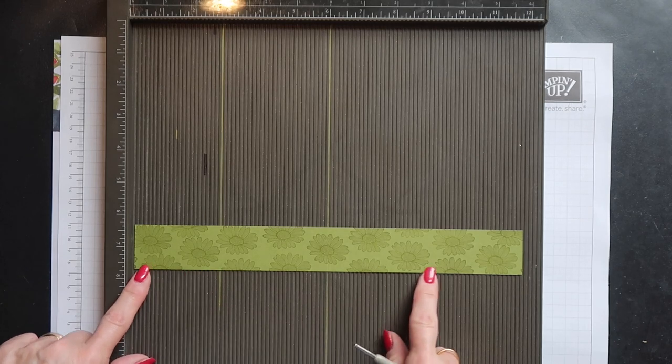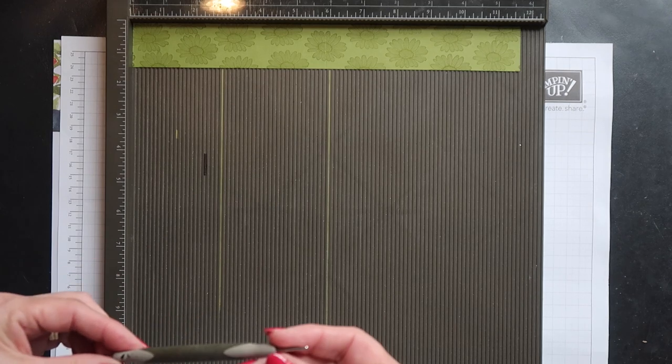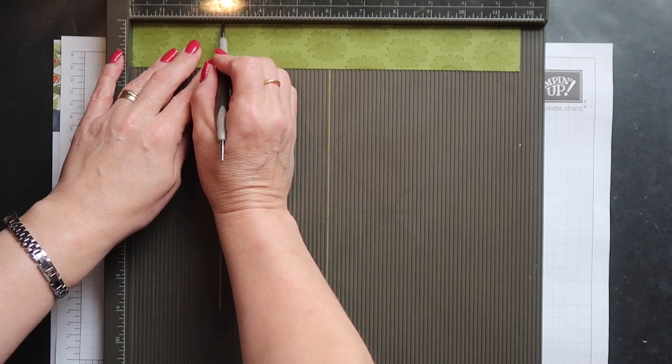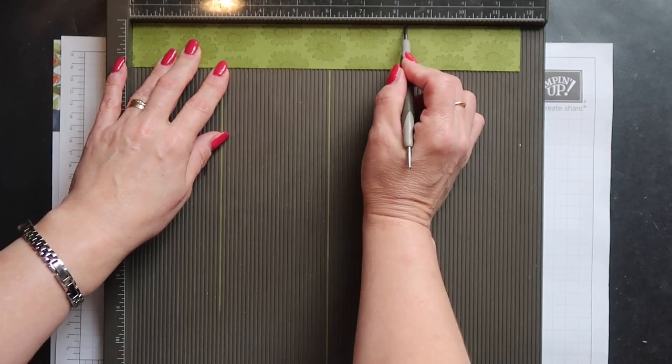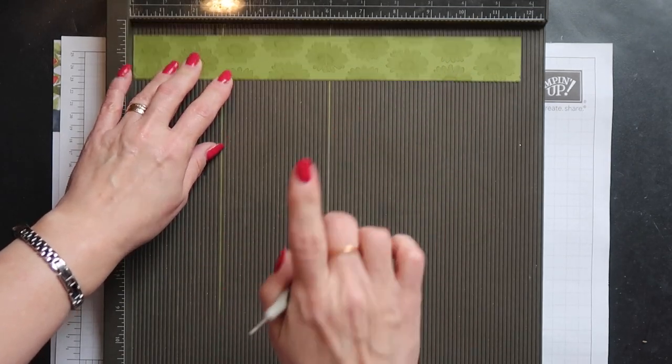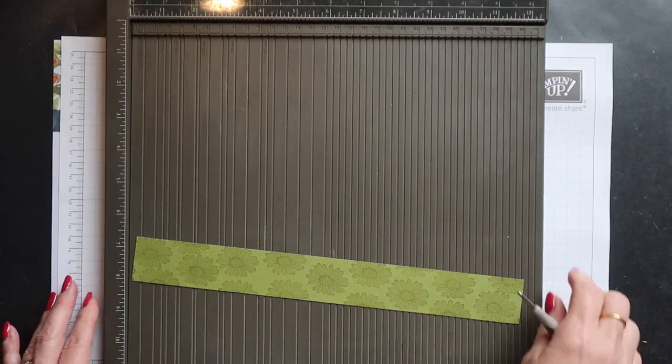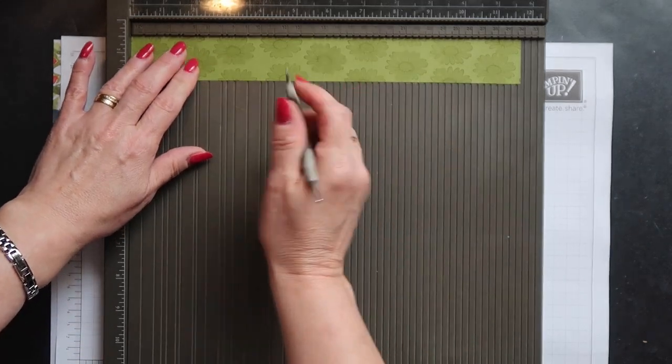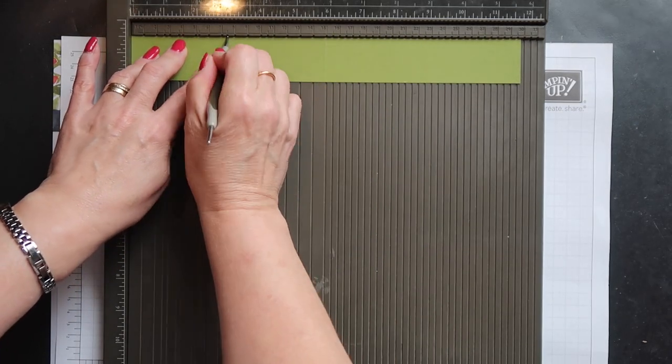I've already scored mine down the centre at 14.85 centimetres because I can't do that with a scoreboard. If you're in the US you need to score your card at two and three quarter inches, five and a half inches and eight and one quarter inch. If you're in the UK you want to use your metric plate on your Simply Scoreboard and on this plate, over on the left hand side you've got a 7.4 mark and you want to score at 7.4 centimetres on both sides and do this on the reverse.